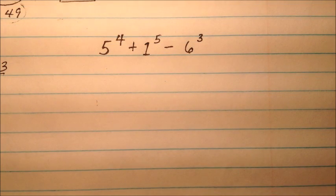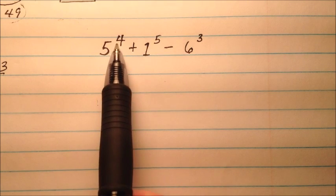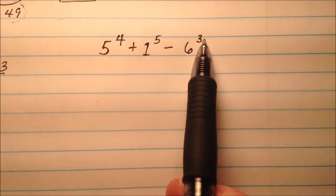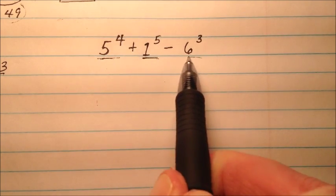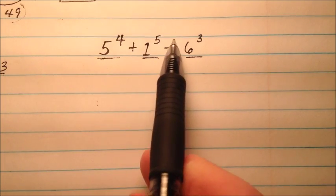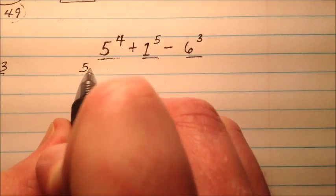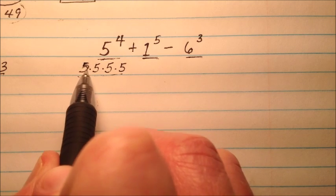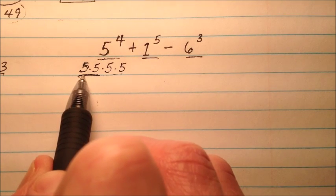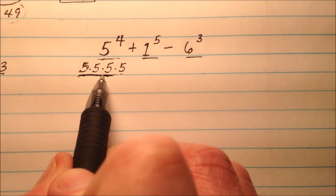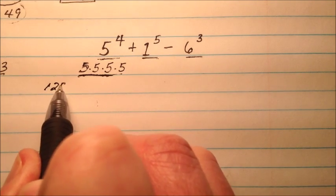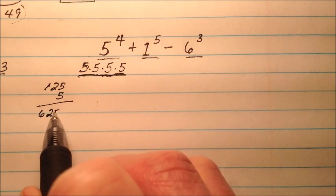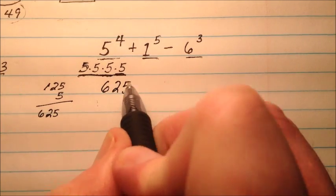In this final example of evaluating exponents, we have 5 to the power of 4 plus 1 to the power of 5 minus 6 to the power of 3. We'll take each one of these individually, figure out what it is, and then do the addition and subtraction. So 5 to the power of 4 is 5 multiplied by itself 4 times: 5 times 5 is 25, times another 5 is 125, times one more 5 is 625.